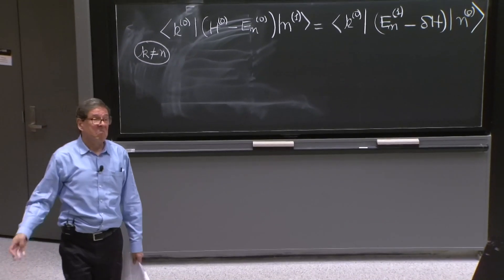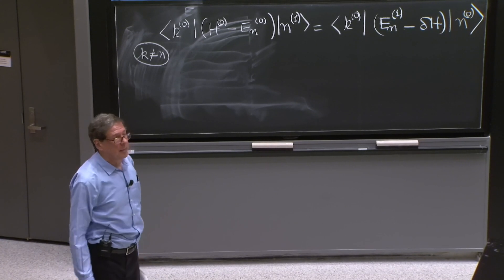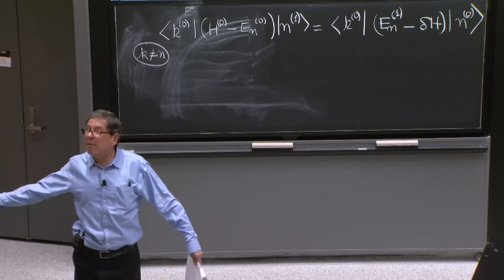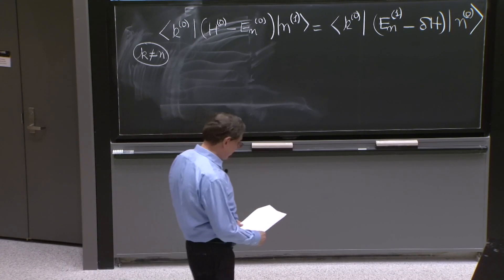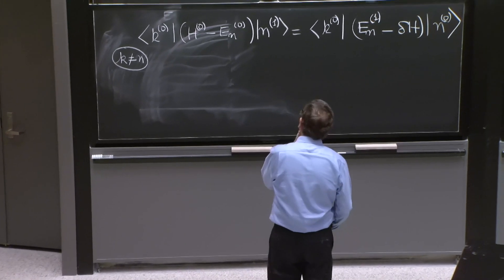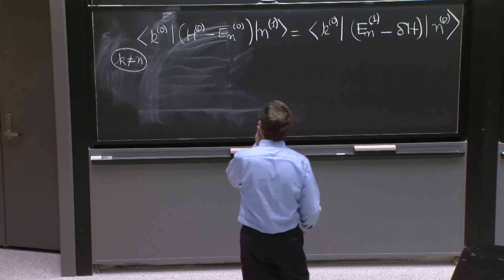And in fact, n1 didn't appear. The state that we wanted didn't appear at all. So now we do this with arbitrary k, and we need to figure out what this gives.